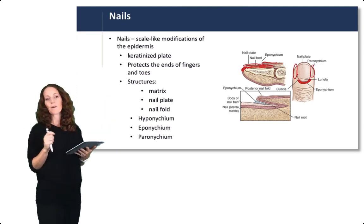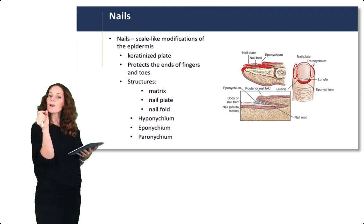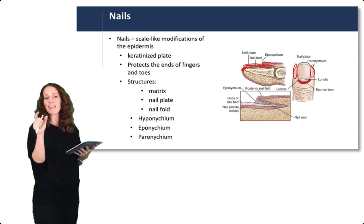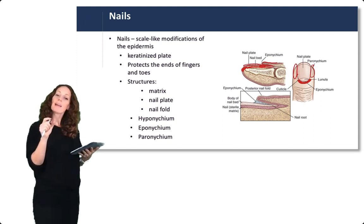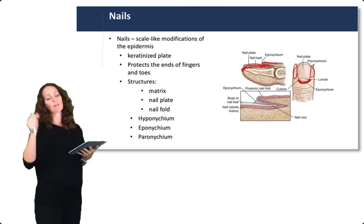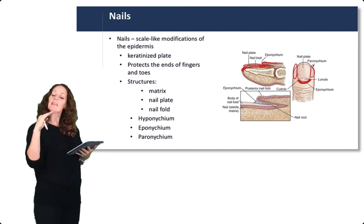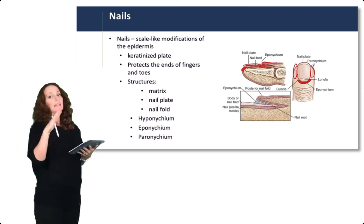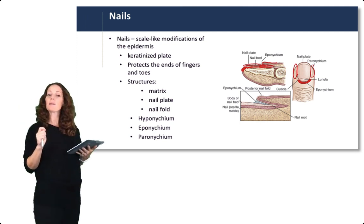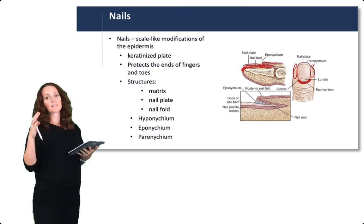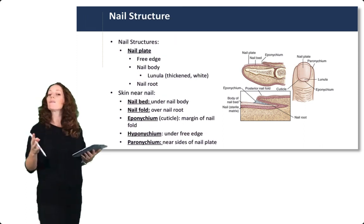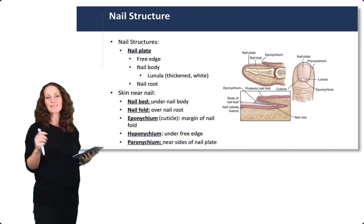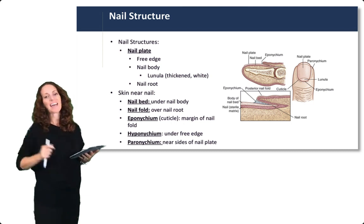Notice the root word onyx, spelled o-n-y-c-h, which refers to nail, where hypo, epi, and para refer to the location in relation to the nail. The hyponychium is the skin layer below the free edge of the nail. The paronychia is the skin layer to the side of the nail plate. And the eponychium is just above the nail fold. Take a minute to find all of these structures and review the anatomy of the nail and the skin nearby.